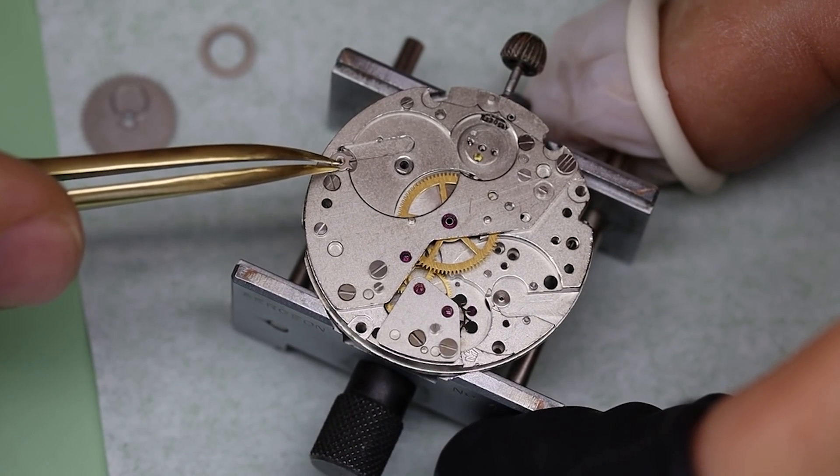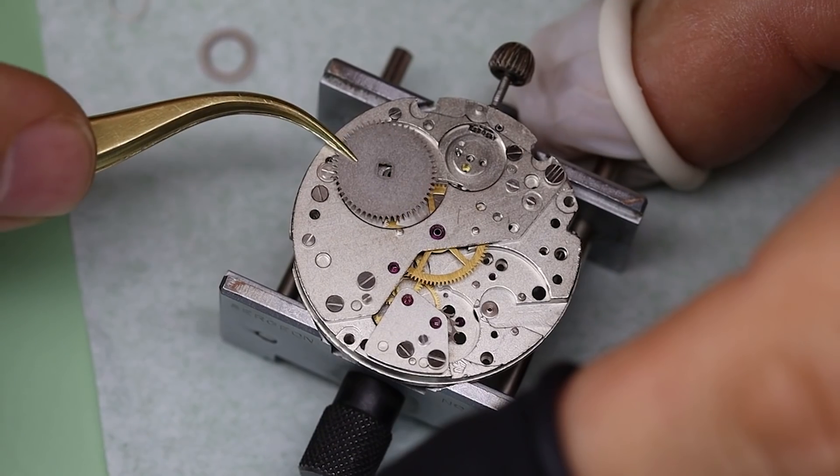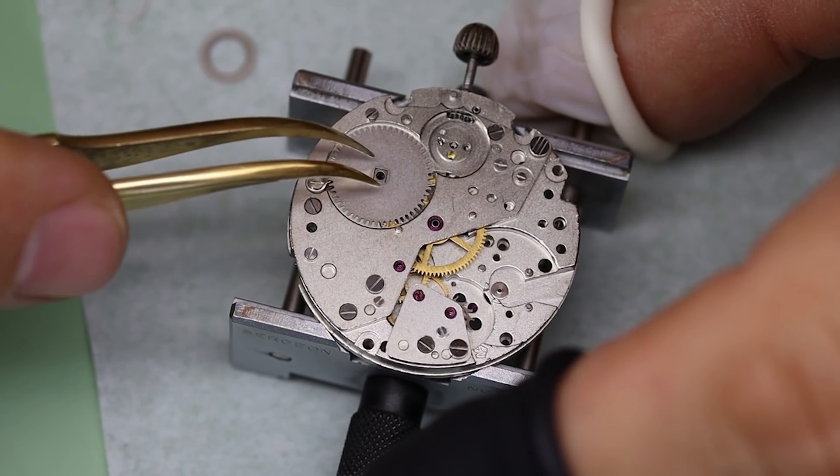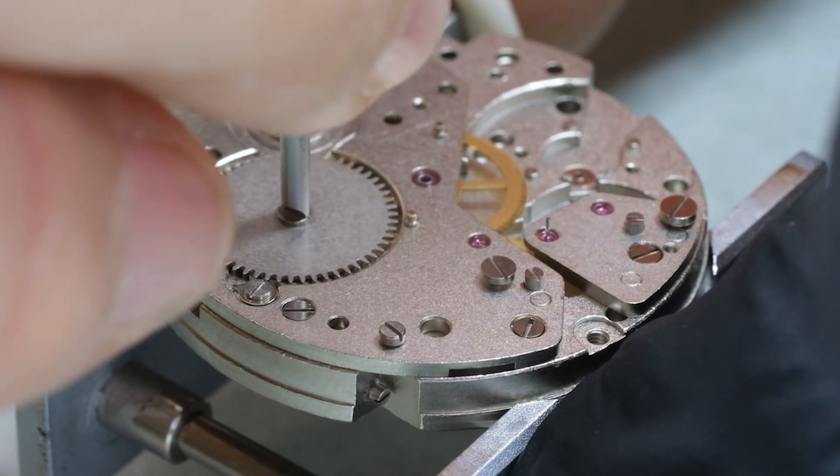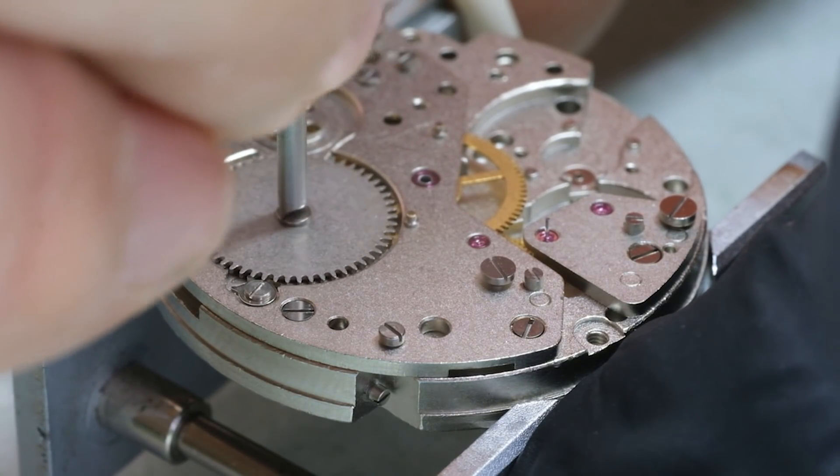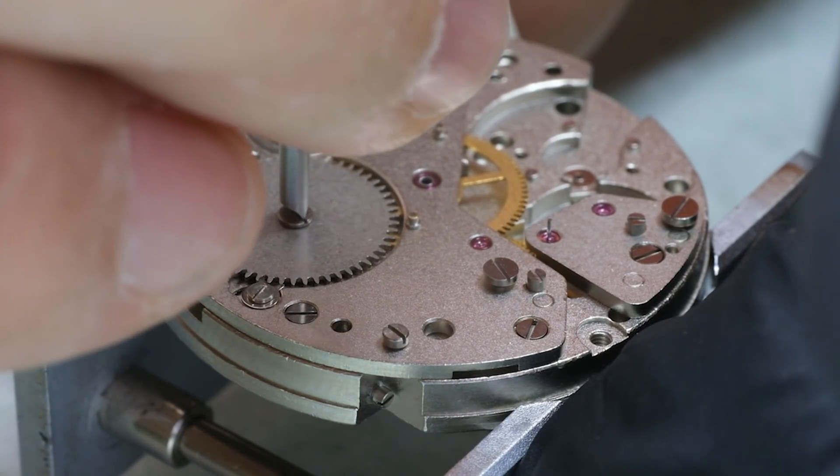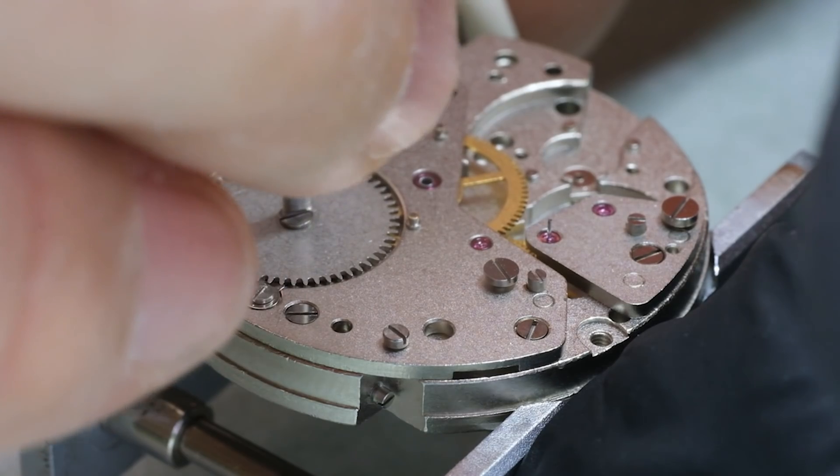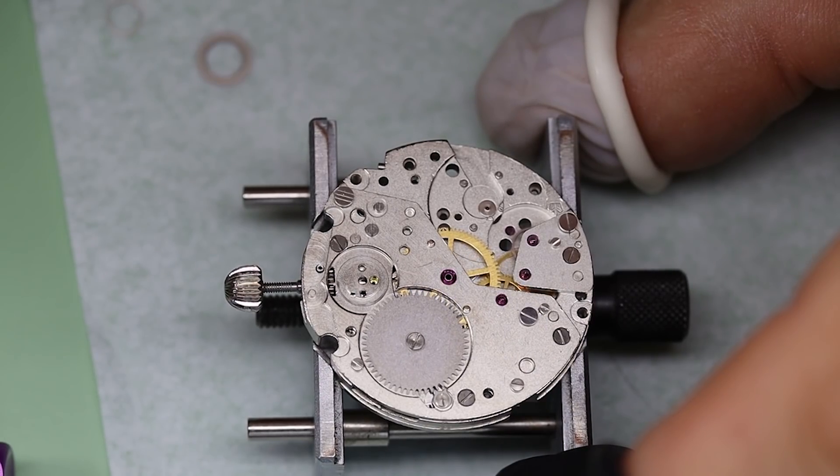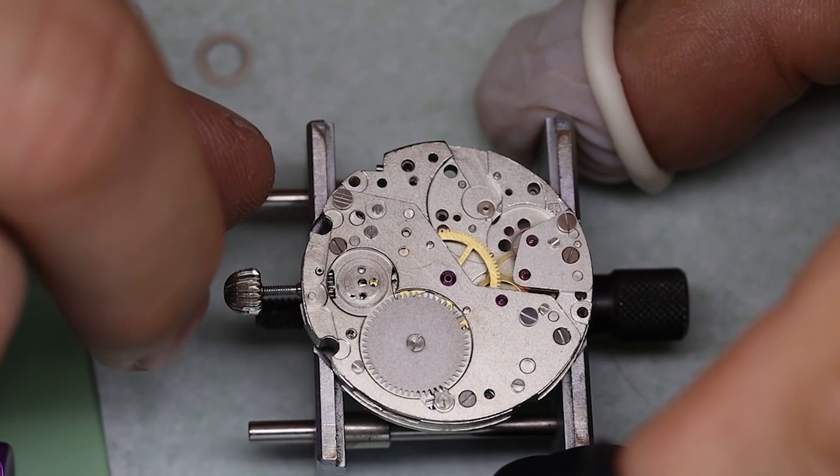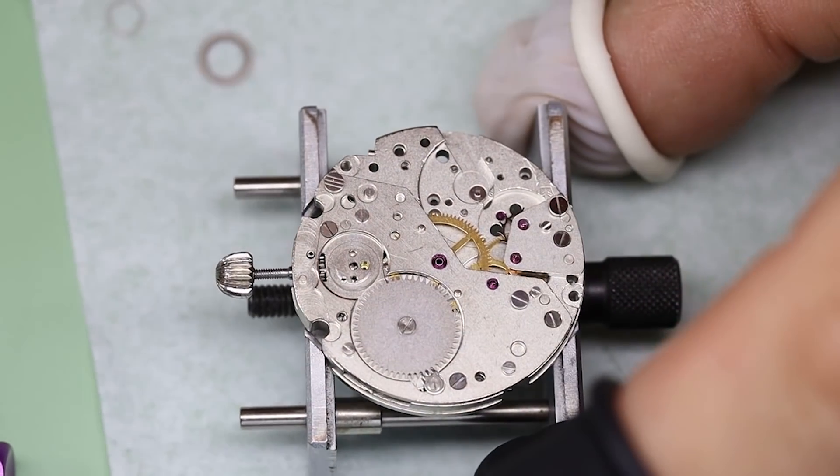Now interestingly, that broken piece on the operating lever was nowhere to be found, so someone actually put this watch together broken. Speaking of broken, we see the train does not run freely. Something is really not good here. It looks like the barrel binds still. So we fixed one problem, but it looks like we have to fix another one.